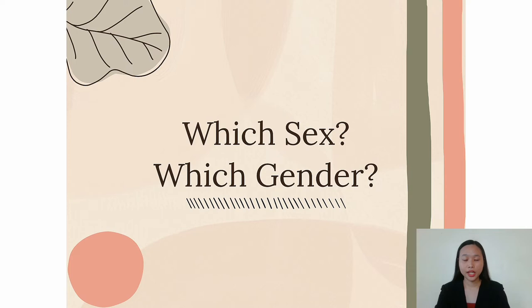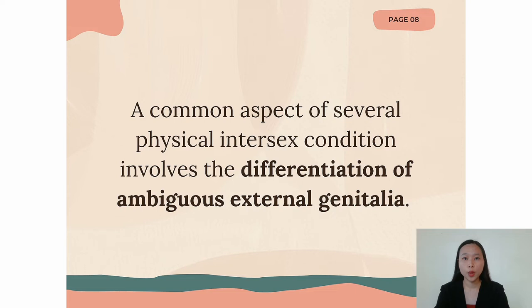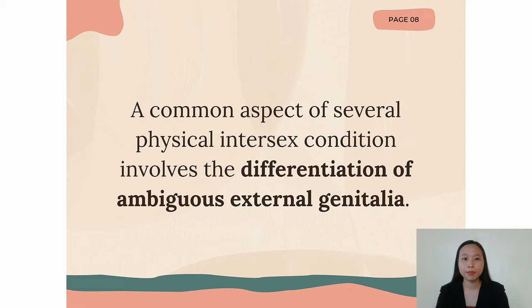Moving on to the main topic — which sex, which gender — a common aspect of several physical intersex conditions involves the differentiation of ambiguous external genitalia. When this occurs, there is often uncertainty regarding, number one, sex assignment — whether the newborn should be male or female — and number two, gender assignment — whether the child should be raised as a boy or girl. These uncertainties often cause anxiety among parents and professionals involved in determining the sex of the baby. Many physicians consider this uncertainty a medical and psychosocial emergency requiring immediate attention and resolution.